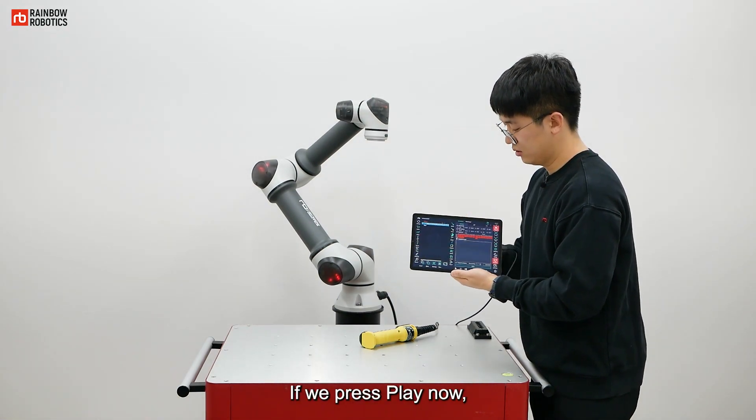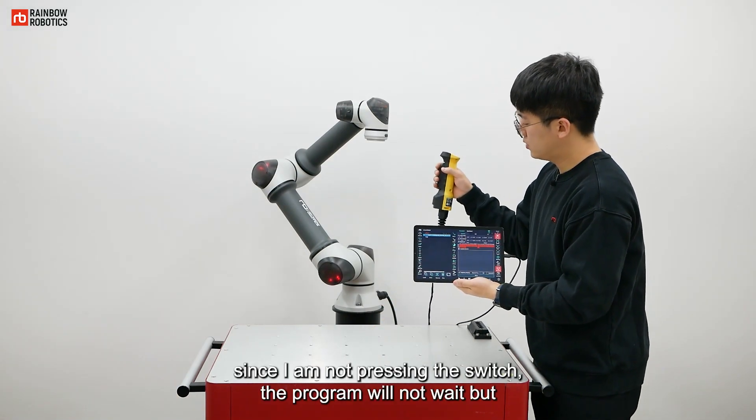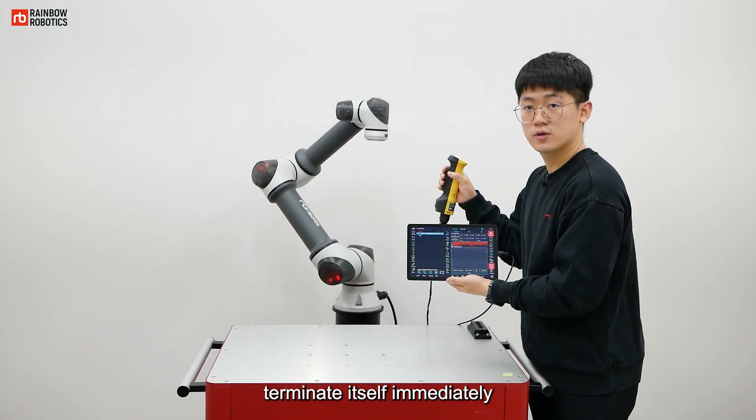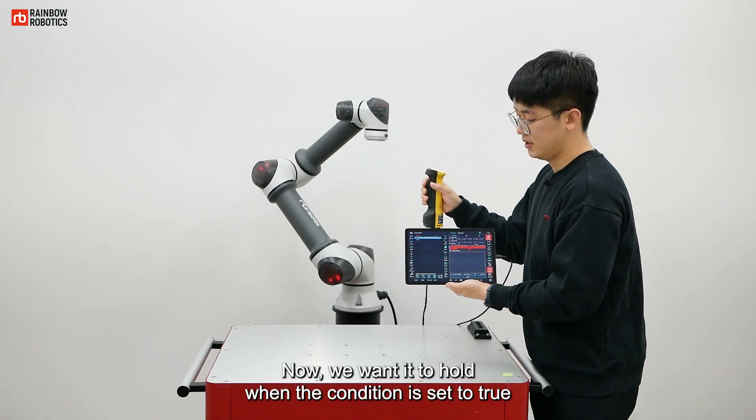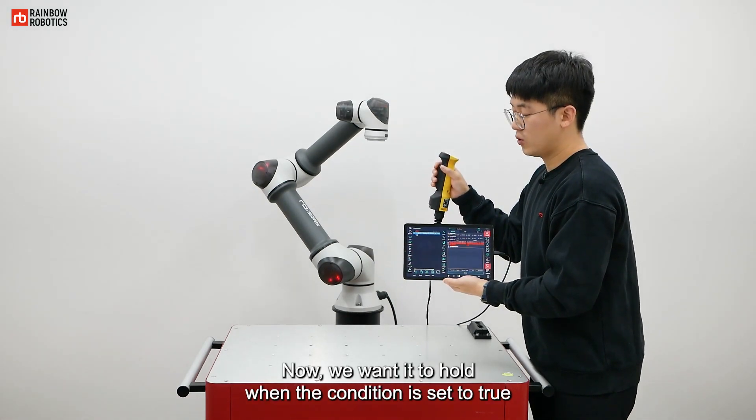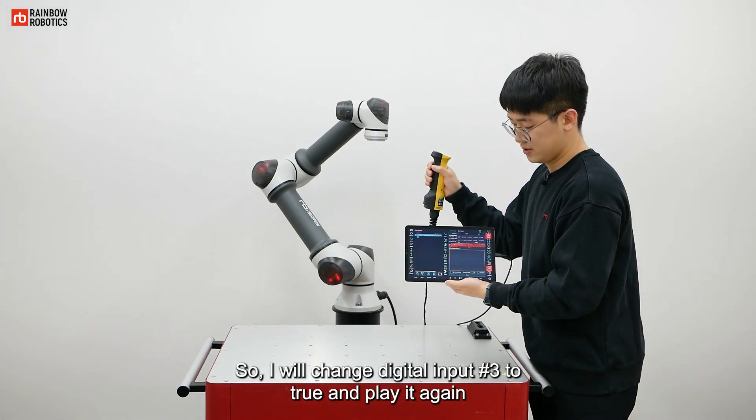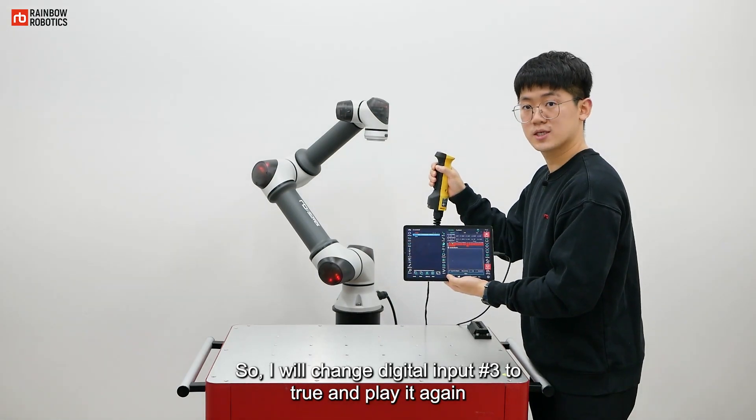If we press play now, since I am not pressing the switch, the program will not wait but terminate itself immediately. Now, we want it to hold when the condition is set to true. So, I will change digital input number 3 to true and play it again.